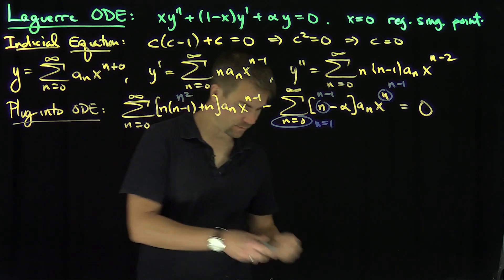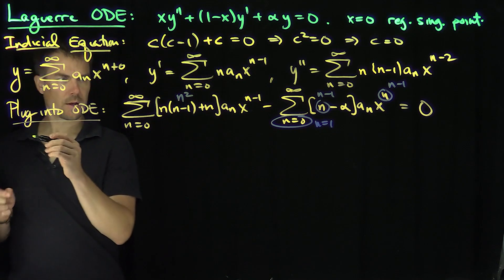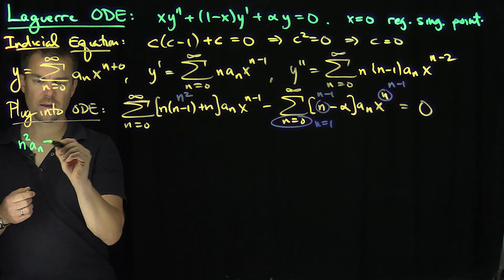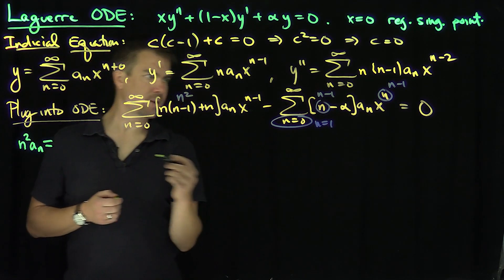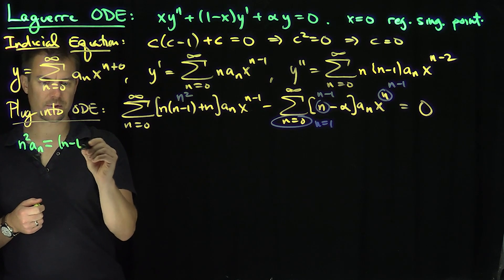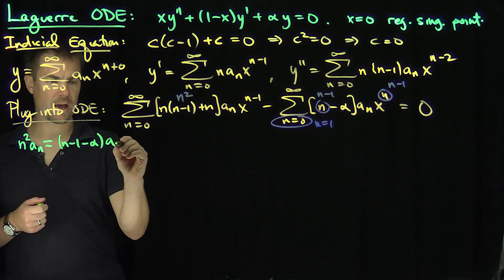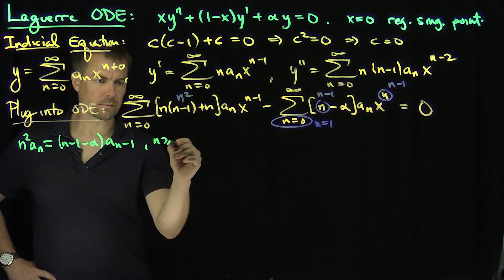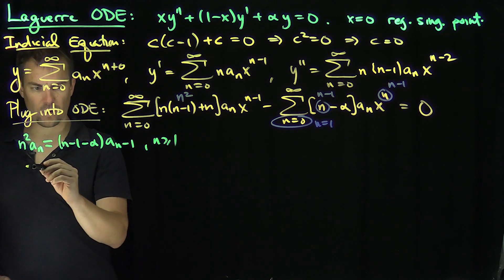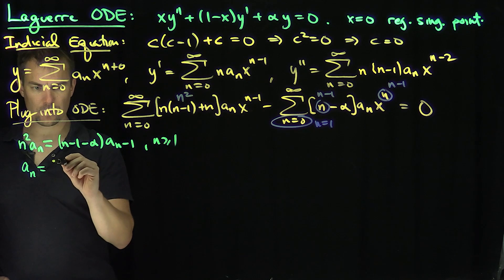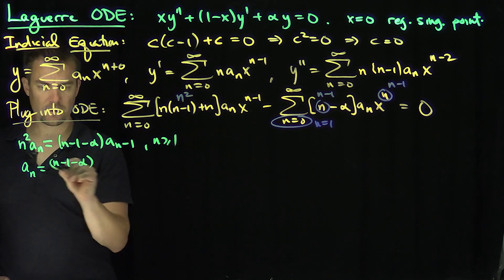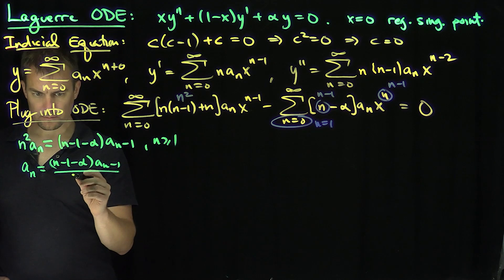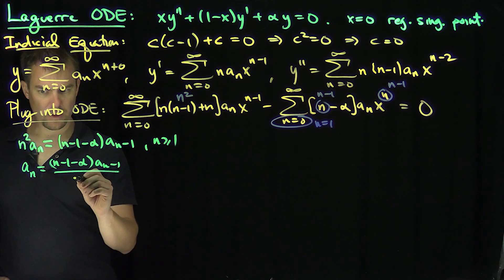So our recursion becomes n squared times a_n equals n minus 1 minus alpha times a_{n-1}, for n greater than or equal to 1. Therefore a_n equals n minus 1 minus alpha over n squared times a_{n-1}.